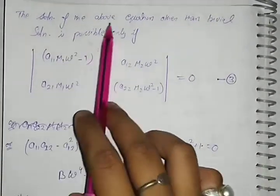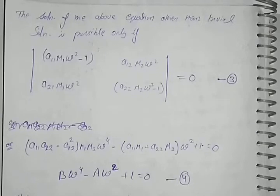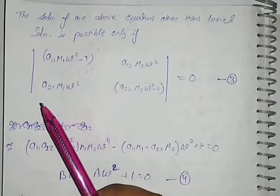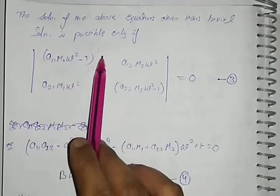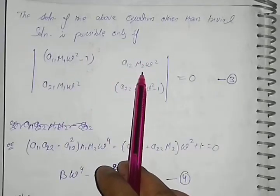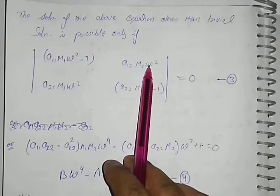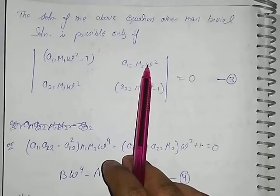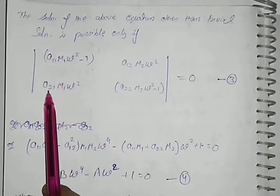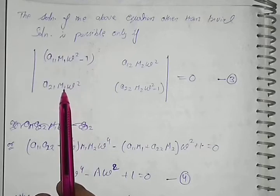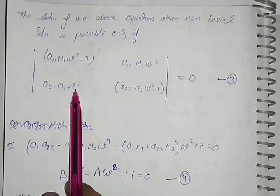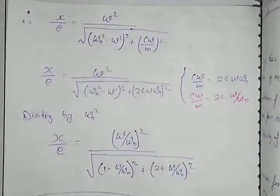Therefore the solution of the above equation, other than trivial solution, when we find this type of equation we have considered the determinant method because we can easily calculate the values. Therefore with the help of determinant value, the coefficient of X1 is equal to this, and the coefficient of X2 is this in equation number 2 first part and equation number 2 second part.